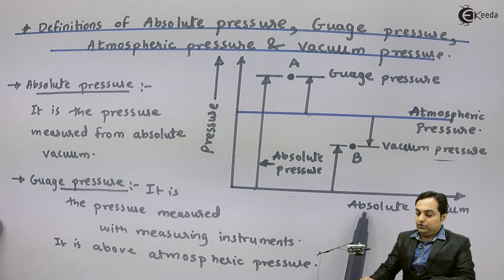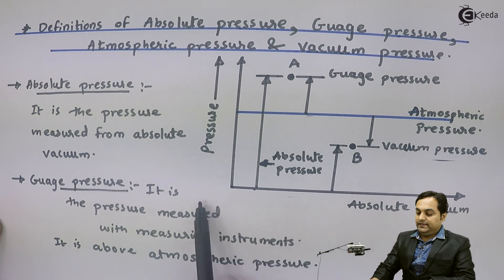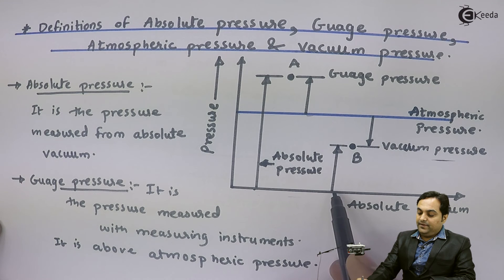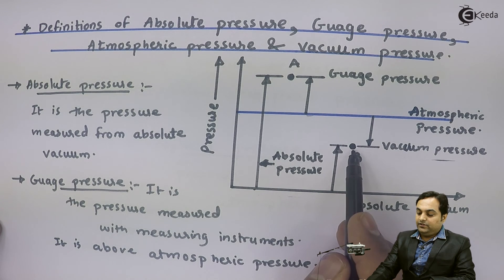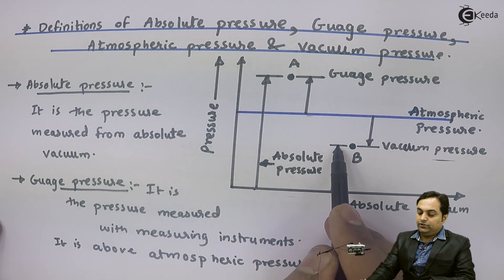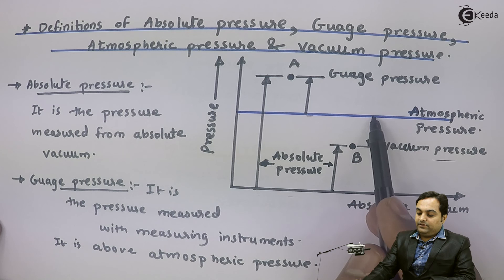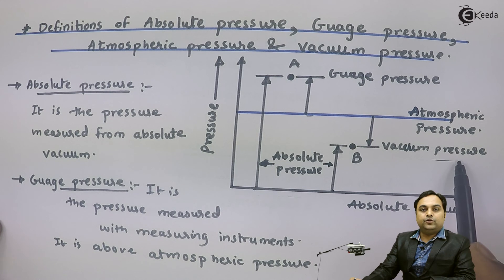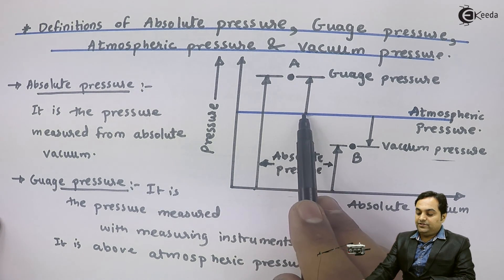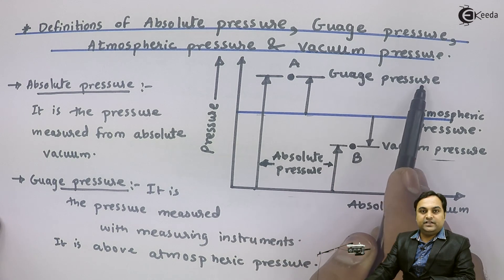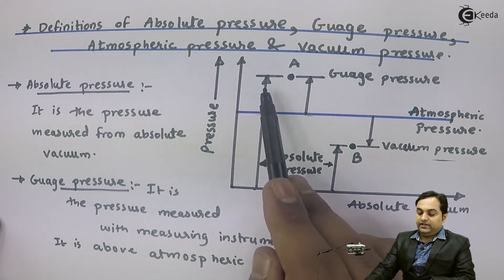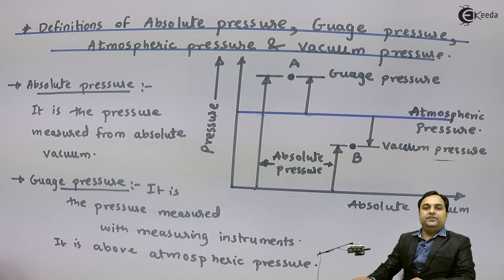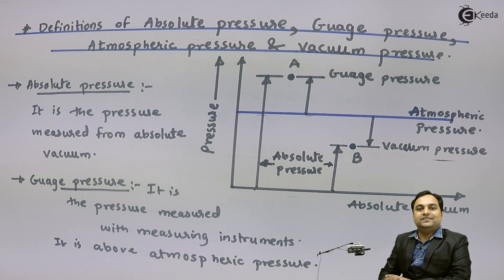So as described in the diagram, absolute pressure is measured from absolute vacuum, which is the zero value of pressure. If I take point B, which is below the atmospheric line, and measure its pressure with reference to atmospheric pressure, that would be called vacuum pressure — not absolute vacuum, because it is not measured with respect to the zero line. For point A, measuring the pressure above atmospheric is gauge pressure, and if the reference is absolute vacuum then it is called absolute pressure. I hope the types of pressure explained in this video are very clear.